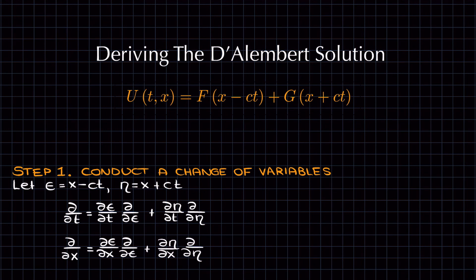Let's figure out d/dt first. Well, d epsilon/dt is minus c, and d eta/dt is c. And d epsilon/dx is 1, as is d eta/dx.